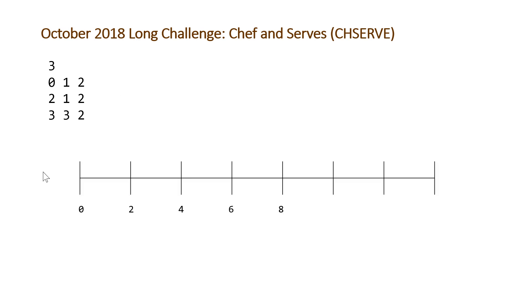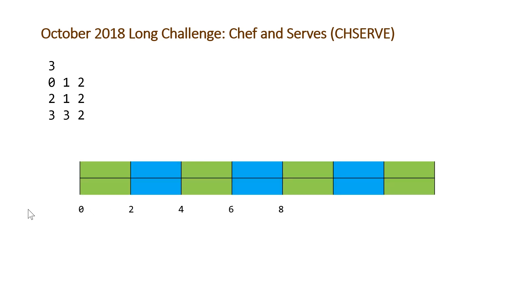Let's take a look at a couple of examples. We have T equal to 3 — three test cases. The first two numbers are P1 and P2, and the last number is K. We can visualize this as a timeline of total points: for the first two points Chef serves, for the next two points Cook serves, and then we repeat. So we have an interval or pattern that repeats, and we only need to focus on one of these intervals.